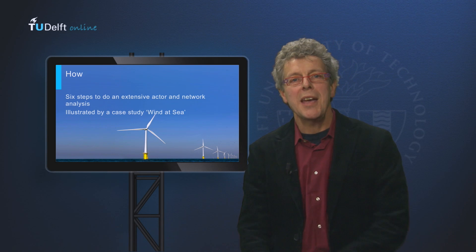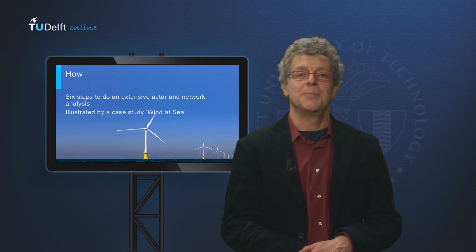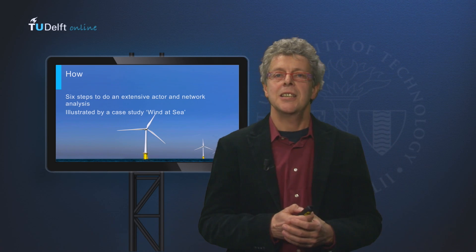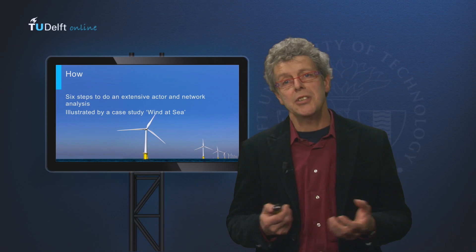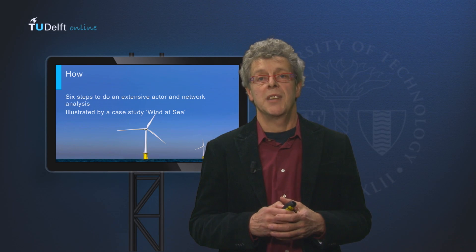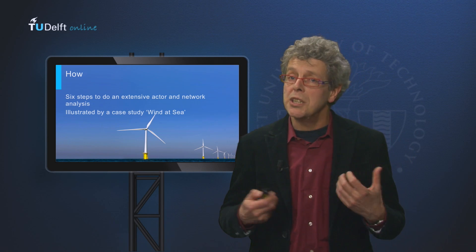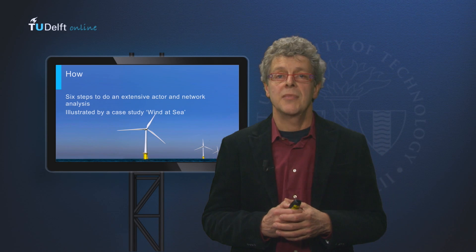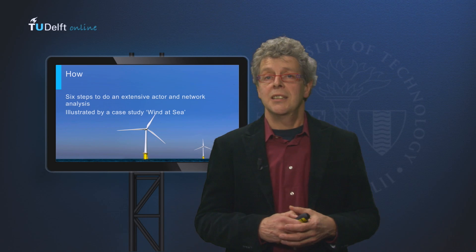We have just discussed why making an actor or stakeholder analysis may be important. Now we are going to do an actor analysis. There are six basic steps, and we will go through these steps one by one, and we will illustrate each step with an example from practice, which we call Wind at Sea, with the Netherlands national government as the problem owner, wanting to stimulate the generation of green wind energy at sea. We will first take the first three steps, and then I will treat the next three.